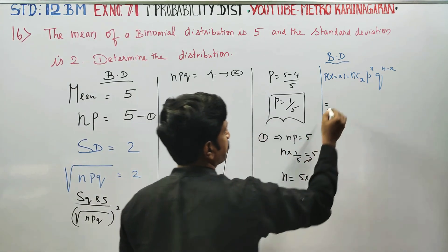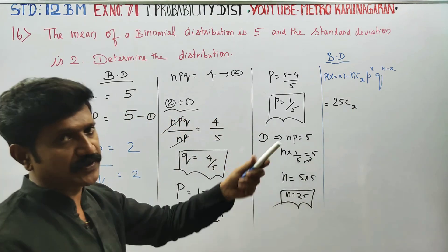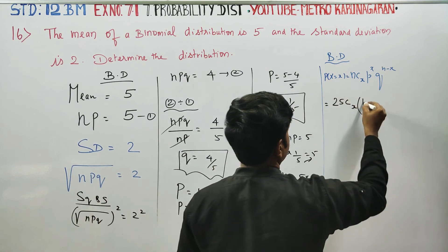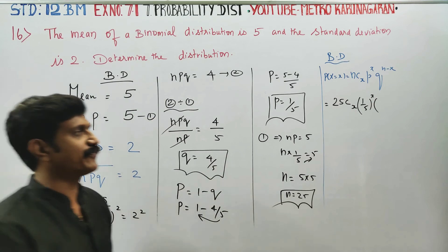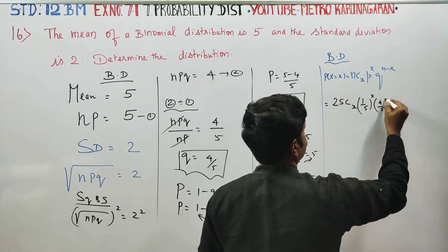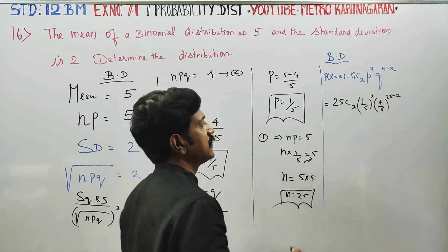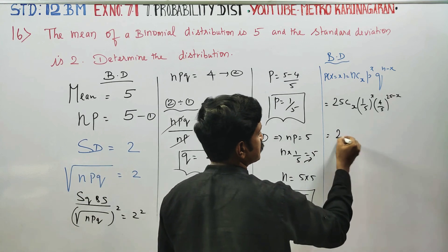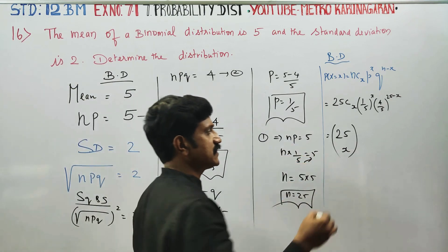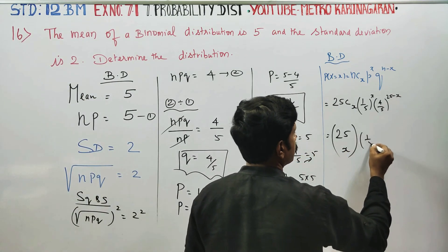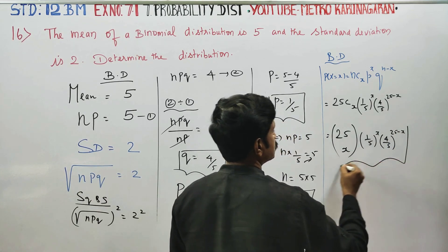With n equals 25, the distribution is P(X=x) equals 25Cx times (1/5) to the power x times (4/5) to the power 25 minus x. This is the final binomial distribution.